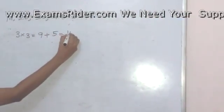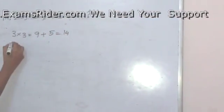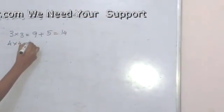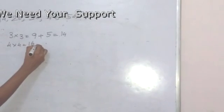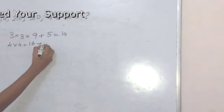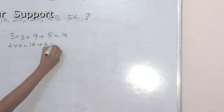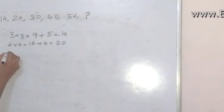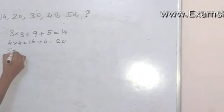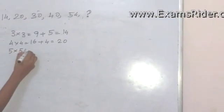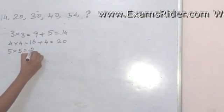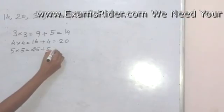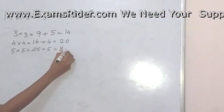4 into 4 is equal to 15, plus 4 is equal to 20. 5 into 5 is equal to 25, plus 5 is equal to 30.